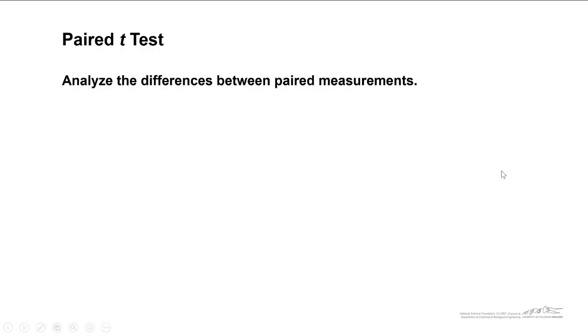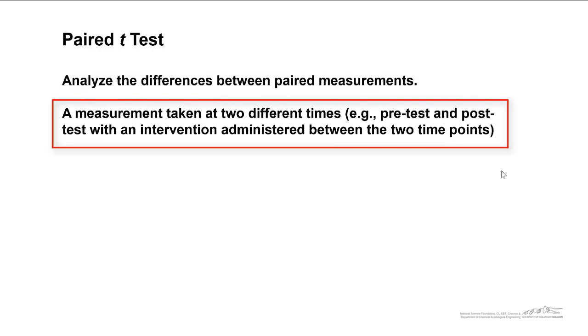A paired t-test is used to analyze the differences between paired measurements. For example, a measurement taken at two different times, a pre-test and post-test, with an intervention administered between the two time points. A lot of times this is used in the medical field in clinical trials.